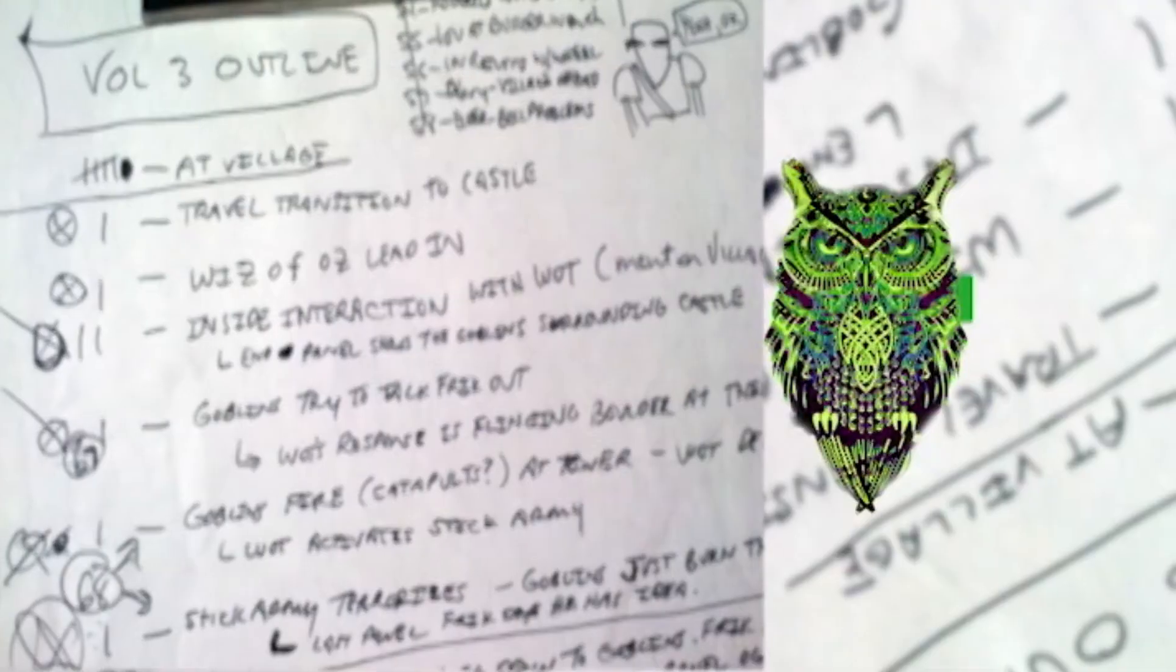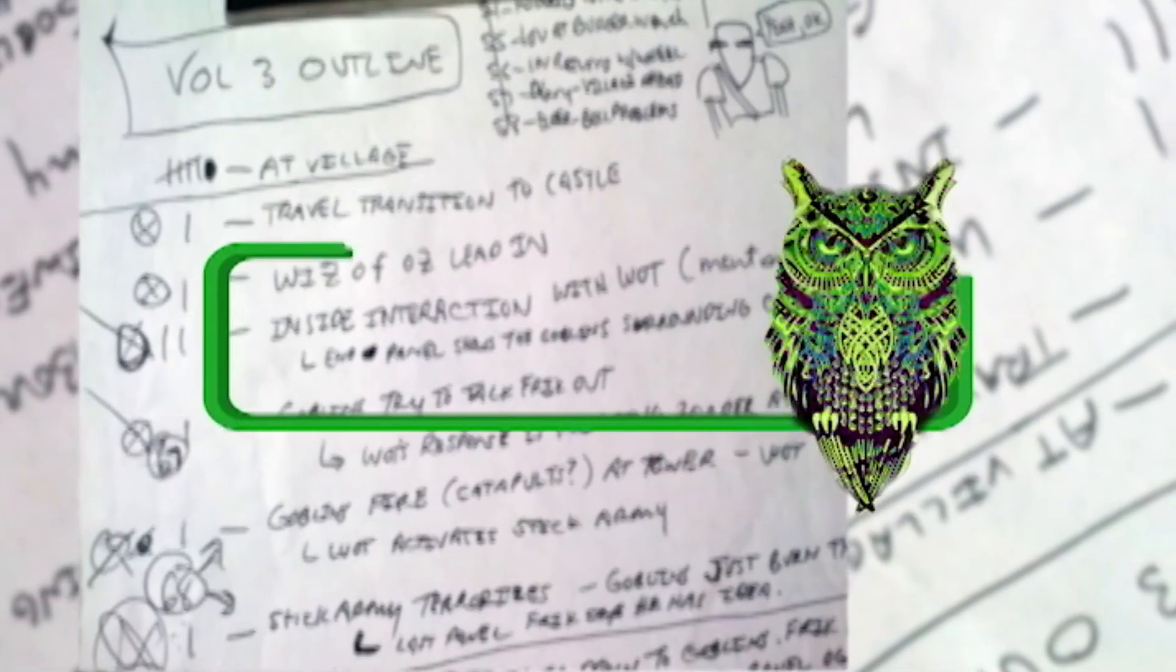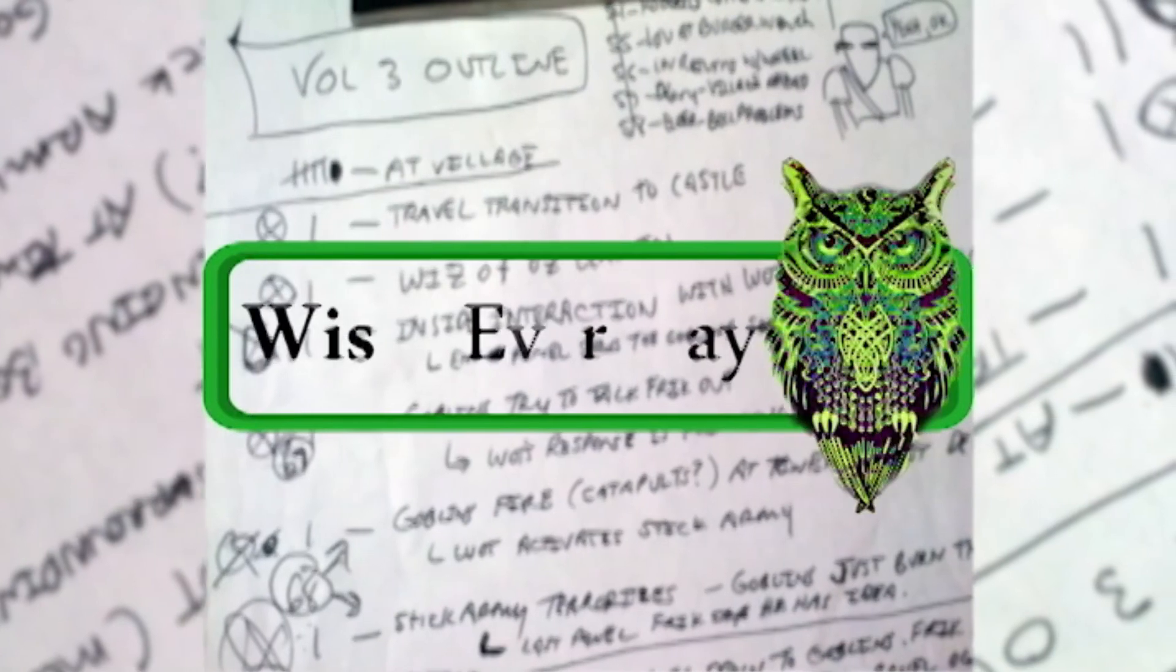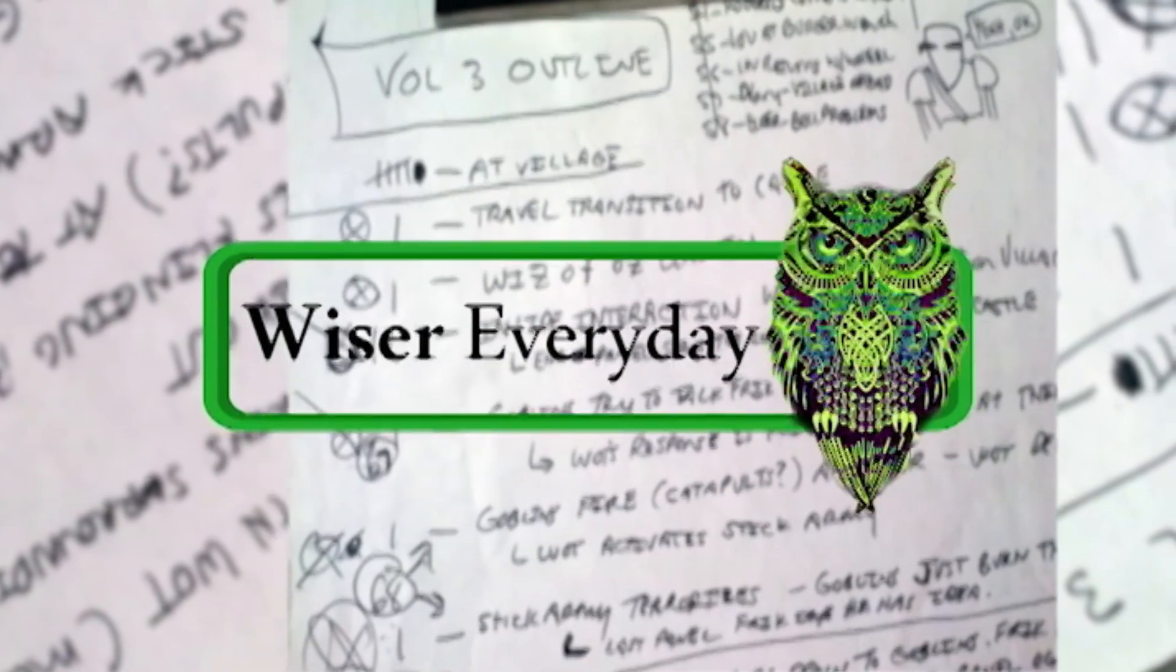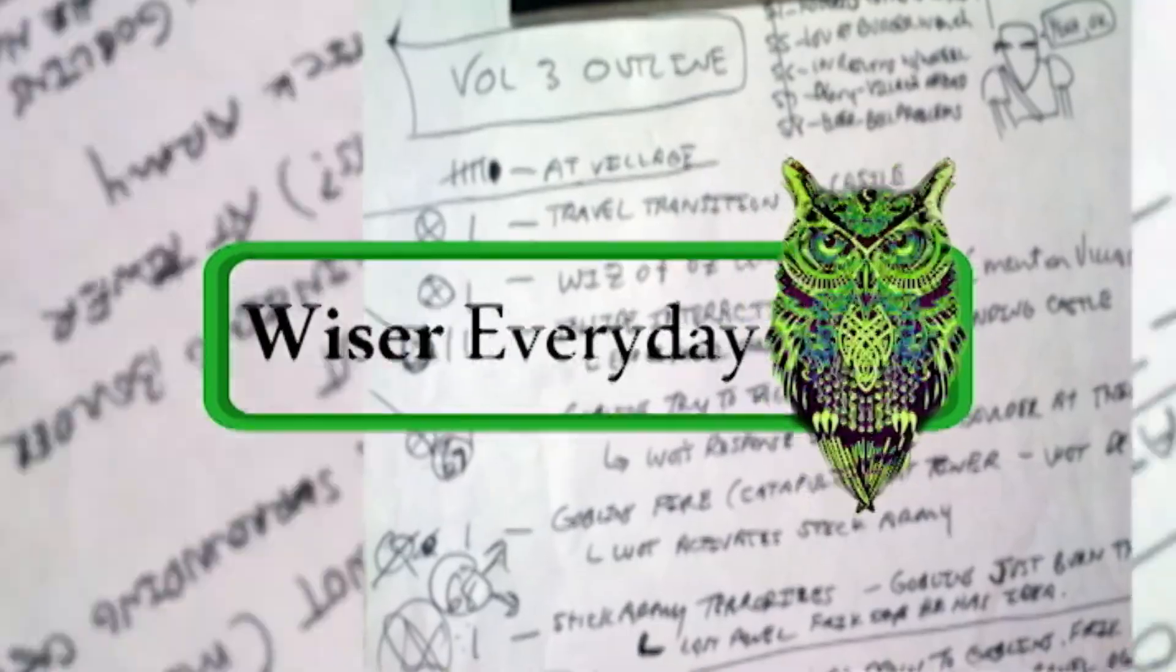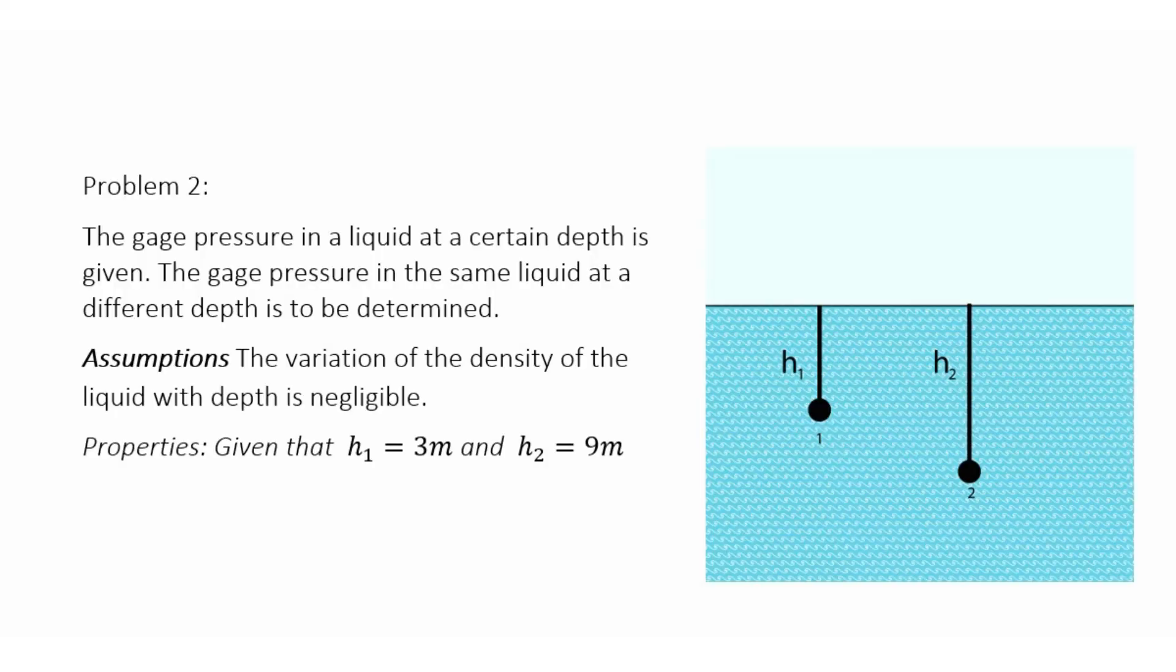Here the statement goes like this. The gauge pressure in a liquid at a certain depth is given. The gauge pressure in the same liquid at a different depth is to be determined. So the assumption that is given here is that the variation in the density of the liquid with depth is negligible.